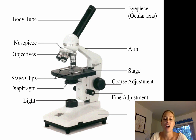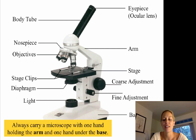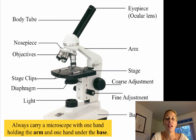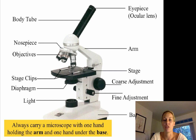Next is the arm, which is used while holding the light microscope, and the base is used to support the rest of the microscope components. When you carry a light microscope, you always need to use two hands — one hand at the base and the other hand at the arm.